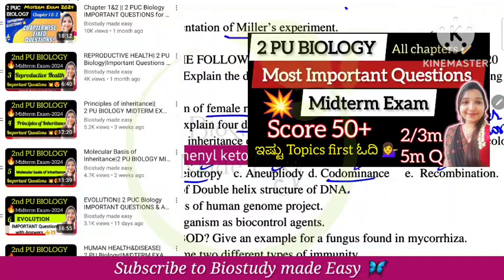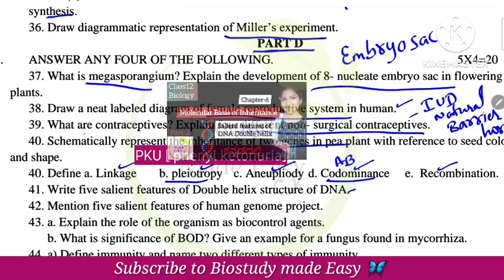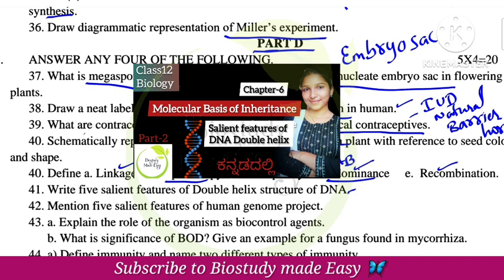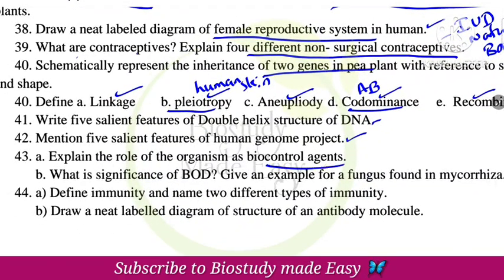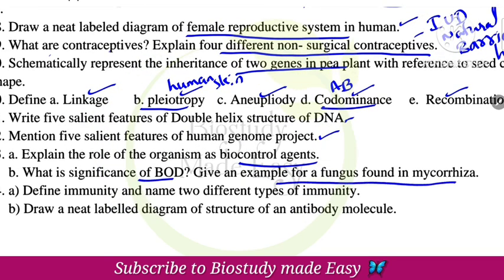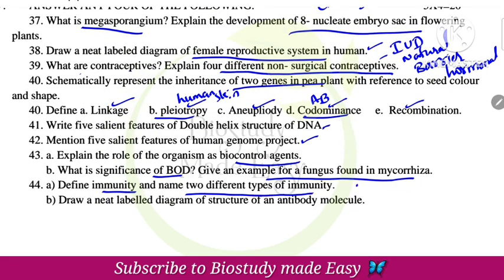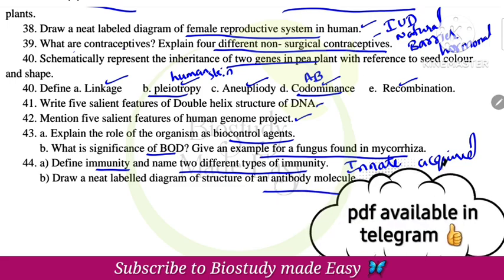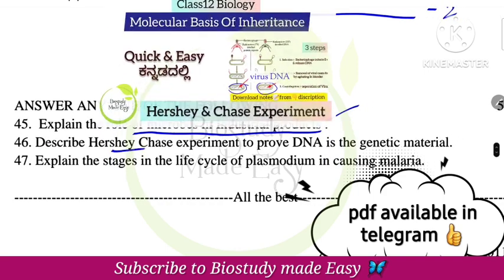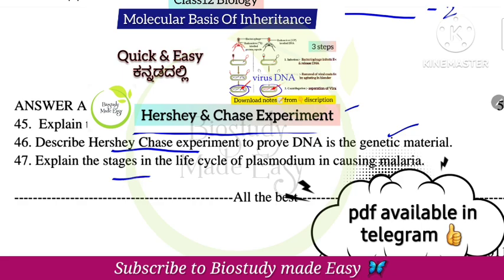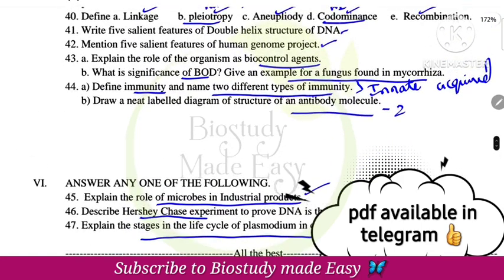Write five salient features of the double helix structure of DNA — very very important. Cover questions from molecular basis of inheritance chapter: salient features of DNA and salient features of HGP — human genome project. Role of organisms as biocontrol agents in microbes in human welfare chapter. Significance of BOD, example for fungus in mycorrhiza. Define immunity — innate and acquired immunity are the two types. Draw a neat labeled diagram of an antibody. Explain role of microbes in industrial products, the Hershey and Chase experiment, and stages of the life cycle of Plasmodium.